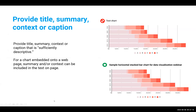The next recommendation is to provide a title, summary, context, or caption that is sufficiently descriptive. The title 'test chart' doesn't pass this test — it should be something more descriptive like 'sample horizontal stacked bar chart for data visualization webinar,' so it's self-explanatory. For a chart embedded on a web page, the summary or context can be part of the text on the page rather than the chart itself. But if a chart is standalone, the summary and context should also be included in the chart.